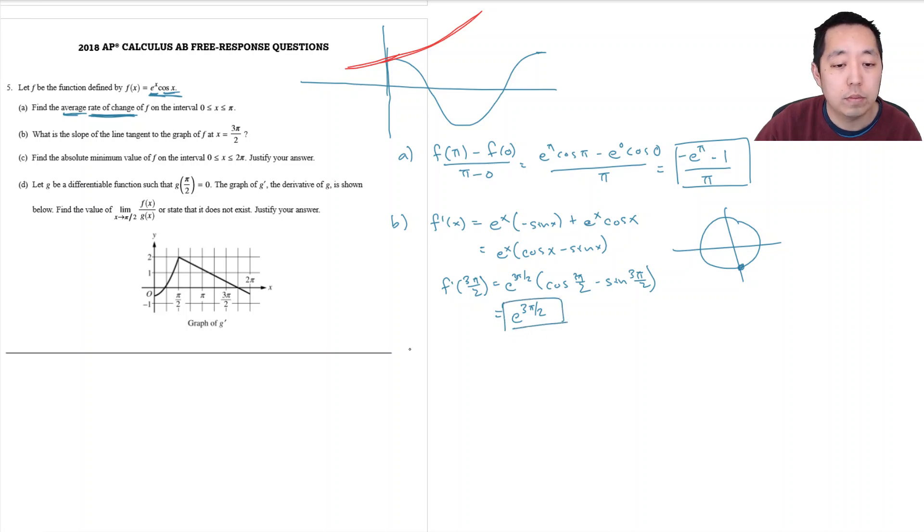For part C, find the absolute minimum value of f on the interval. I have to find all the critical numbers and I want to check the end points and the critical numbers to find all the absolute minimum value and I just pick whichever one is the smallest.